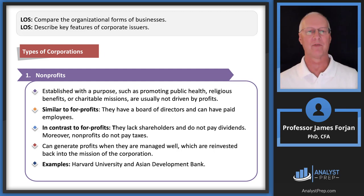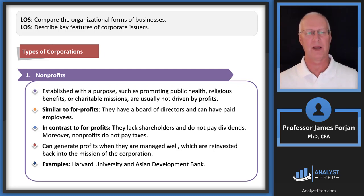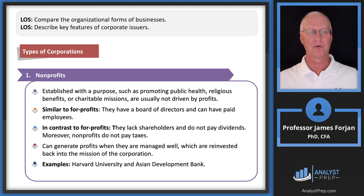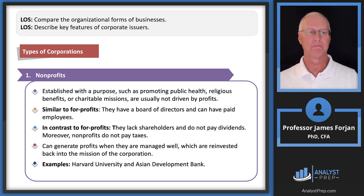Types of corporations: not-for-profit. There are hospitals, religious affiliations, charitable missions, and they're not usually driven by profits. However, the most successful nonprofits, although not driven by profits, are run as a business and therefore are more successful from a financial standpoint. Most nonprofits have a board of directors and employees, some of whom are paid huge salaries — and those are fascinating articles that show up in the Wall Street Journal. You should be reading the Wall Street Journal every day.